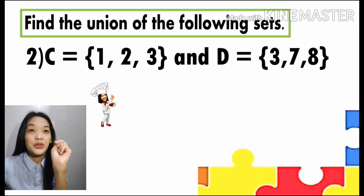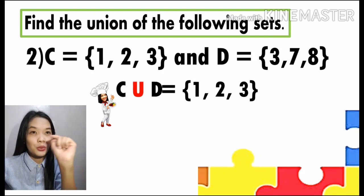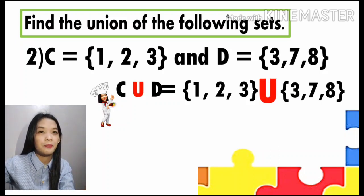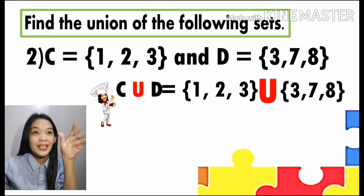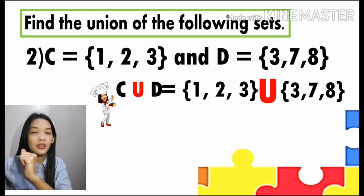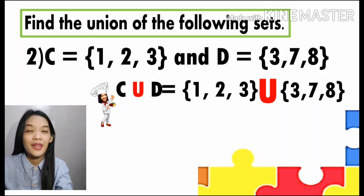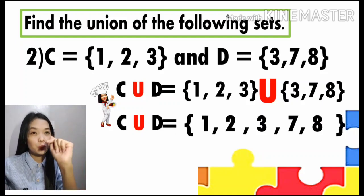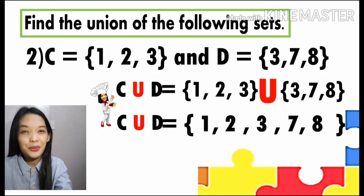Let us have number two: C union D. Set C has the elements one, two, and three, then the symbol for the union, and set D has the elements three, seven, and eight. Observe carefully — are there common numbers from C and D? Yes, there is, and that is number three. From the definition, if there are similar elements you'll just write it once. Therefore our answer, C union D, will have the following elements: one, two, three, seven, and eight.